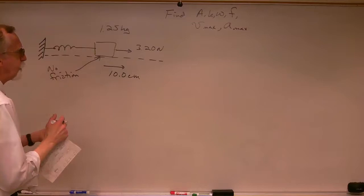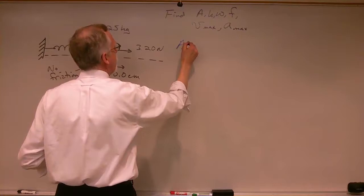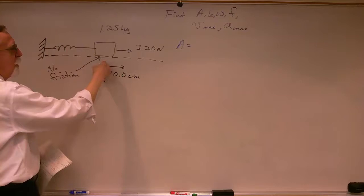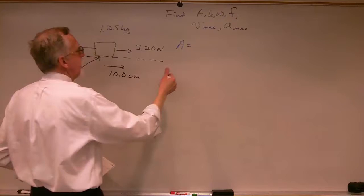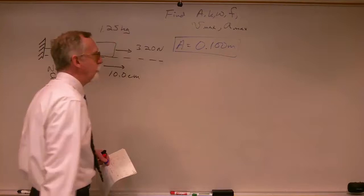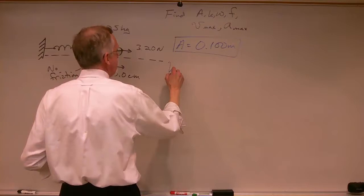First, the amplitude. What's the amplitude of the motion? We know we displace it 10 centimeters from equilibrium and let it go, so the amplitude is going to be 10 centimeters — or in SI units, 0.100 meters. That one was easy.